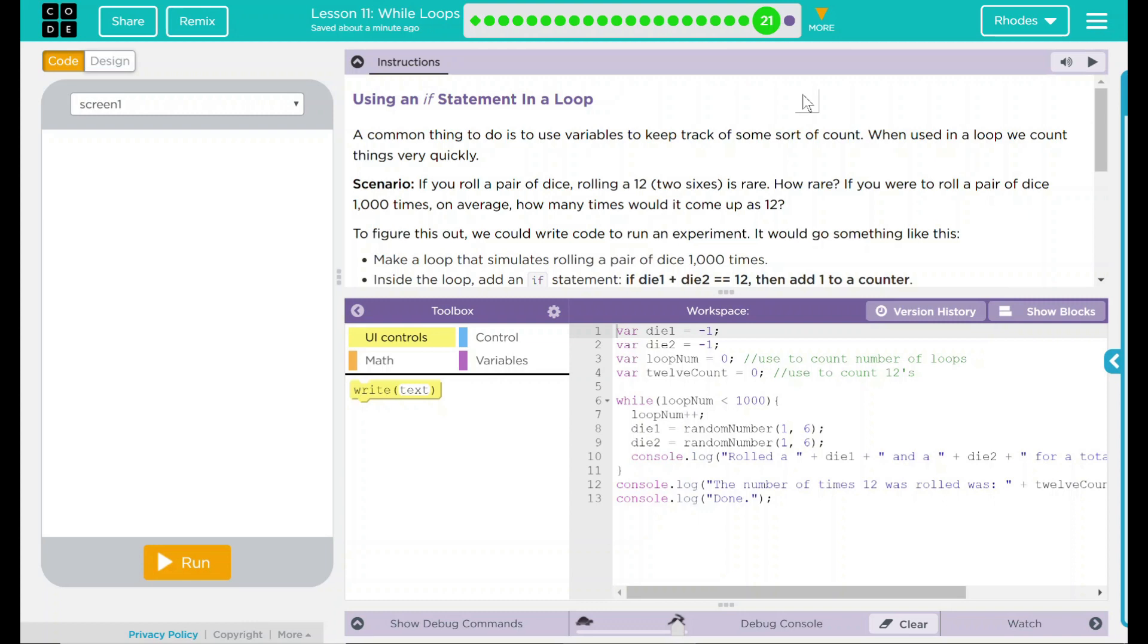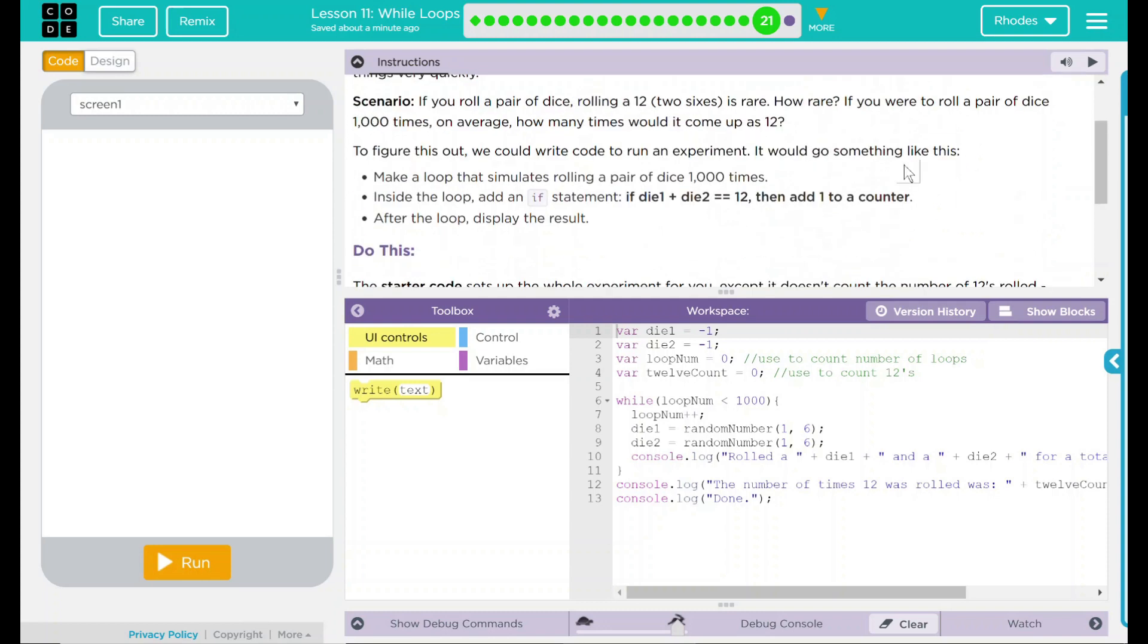A common thing to do is to use variables to keep track of some sort of count. When used in a loop, we count things very quickly. Scenario, if you roll a pair of dice, rolling a 12, two sixes is rare. How rare? If you were to roll a pair of dice a thousand times, on average, how many times would it come up as a 12? To figure this out, we could write code to run an experiment. It would go something like this.